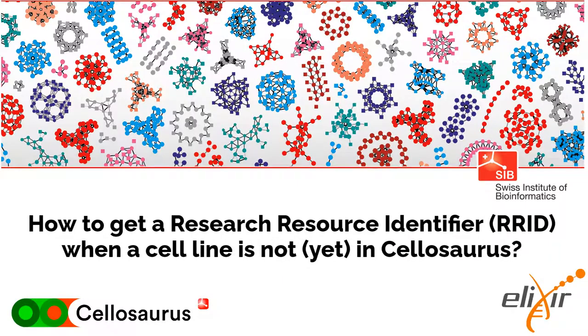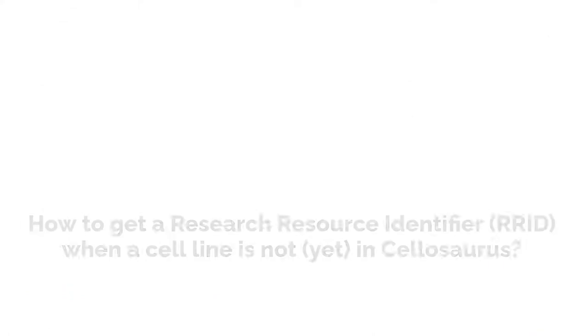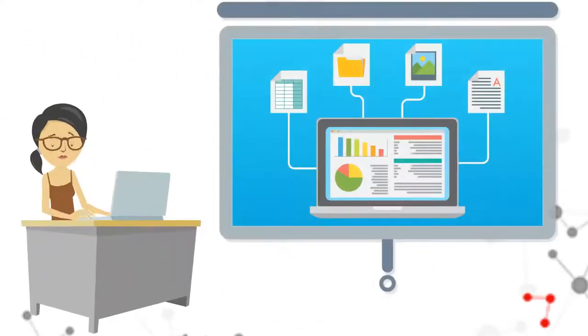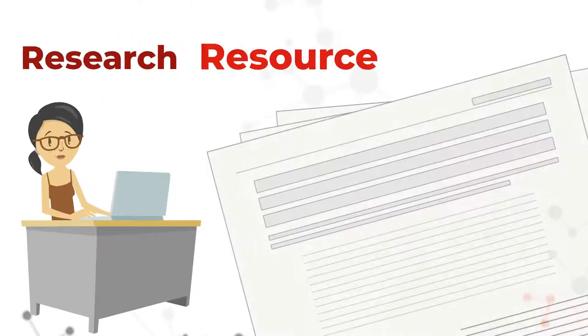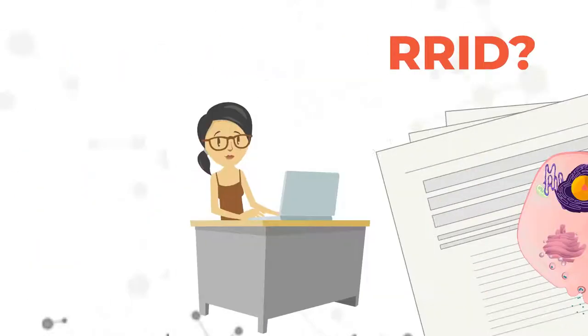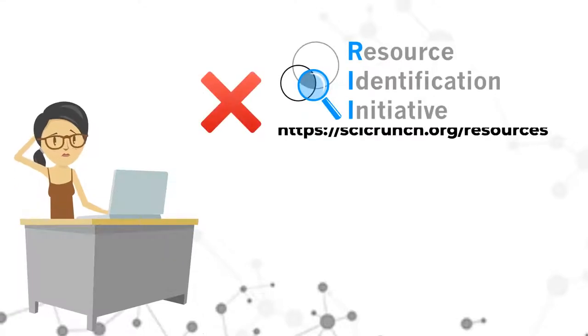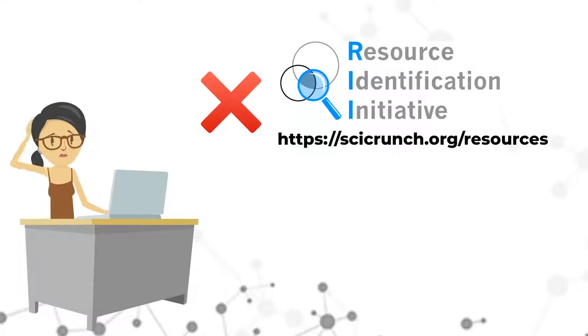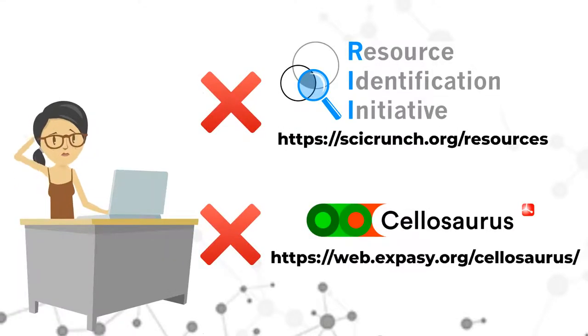How to get a Research Resource Identifier when a cell line is not yet in Cellosaurus. You are preparing a manuscript for publication and you need the Research Resource Identifier, or RRID, to reference your cell line. Unfortunately, you cannot find it either in the Resource Identifier Initiative Portal or in the Cellosaurus.